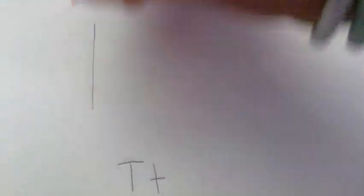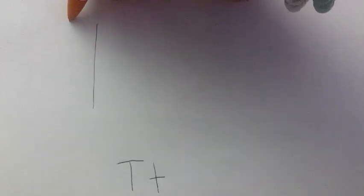Starting at the top of your page, draw a long line down. And you're going to draw a short line over and on top of that line to make your uppercase T.